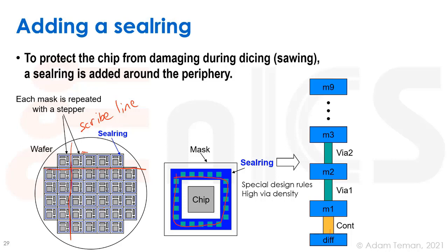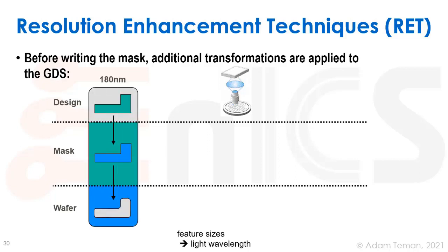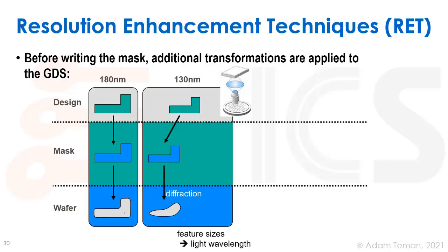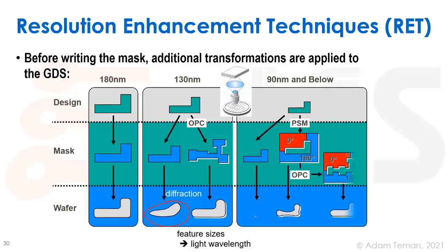A final point is Resolution Enhancement Techniques. Before writing the mask, additional transformations are applied to the GDS. At 180nm, we'd draw an L-shape and the mask would be that same L-shape, giving a nice picture on the wafer. But at 130nm with the same mask shape, diffraction causes a messy result. So we use Optical Proximity Correction, or OPC, which adds nooks, crannies, and little corners around features to give a nicer, better picture. At even lower technologies like 90nm, OPC alone isn't enough.